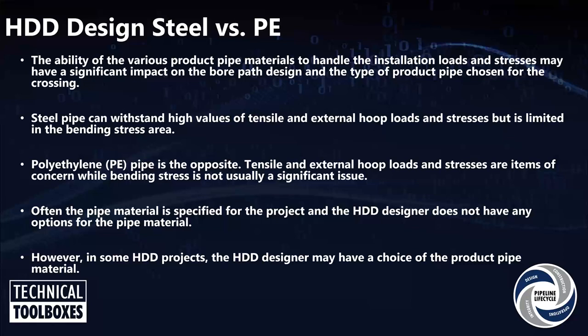Steel pipe can withstand high tensile loads and very high external hoop stress loads, but steel doesn't handle bending stress very well. Normally when we have a problem with stressing on steel pipe, it comes from bending stresses. Polyethylene is just the opposite — it will take a lot of bending stress without any problem, but it won't handle as much tensile or external hoop loads as steel pipe. Most projects the pipe material is specified for you, so you have to design the profile making allowances for the material you have to use.